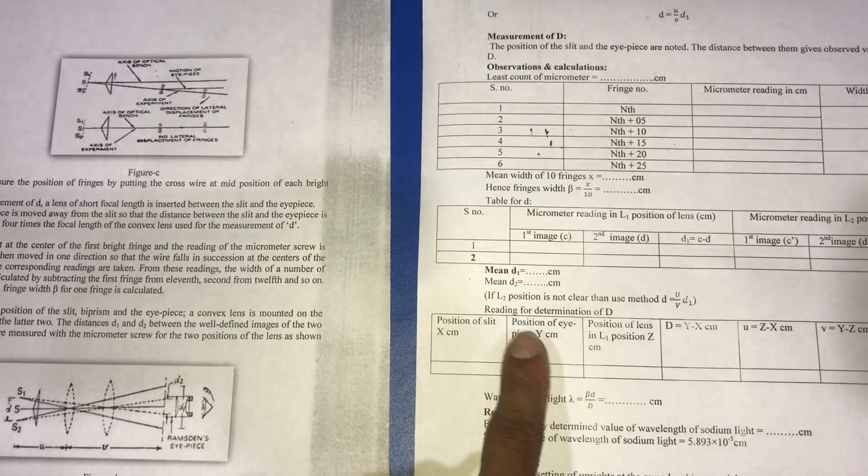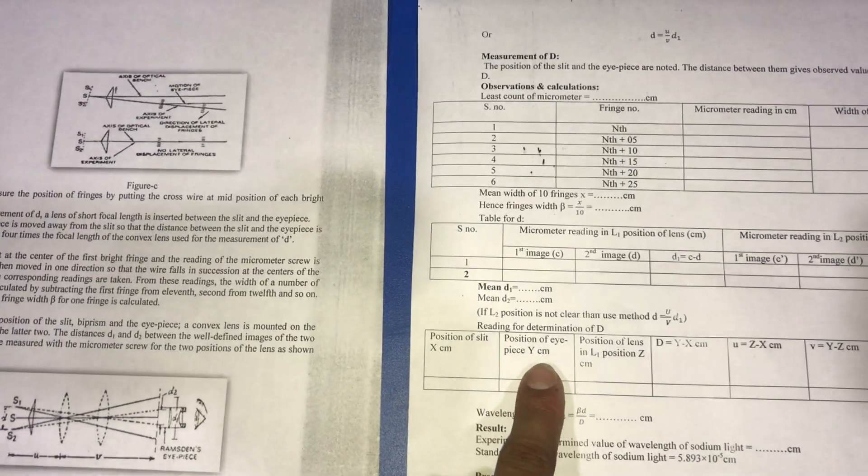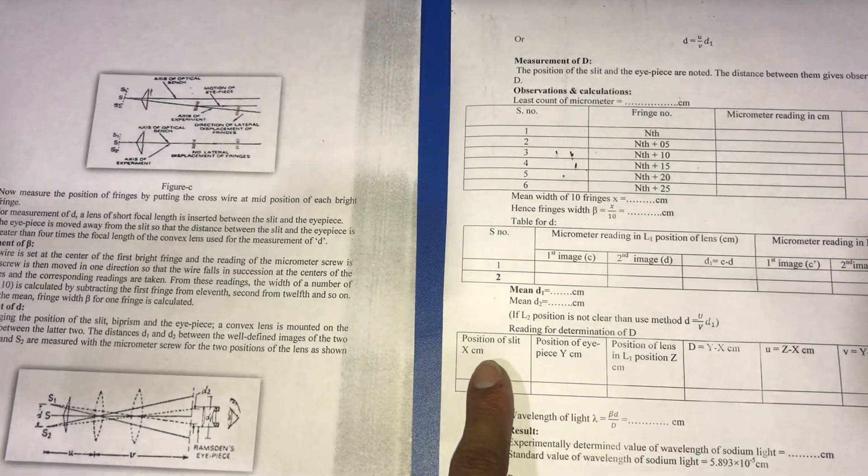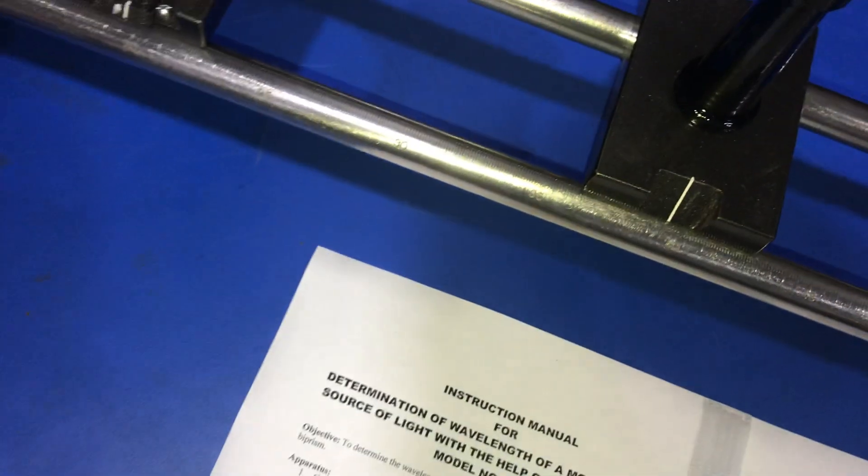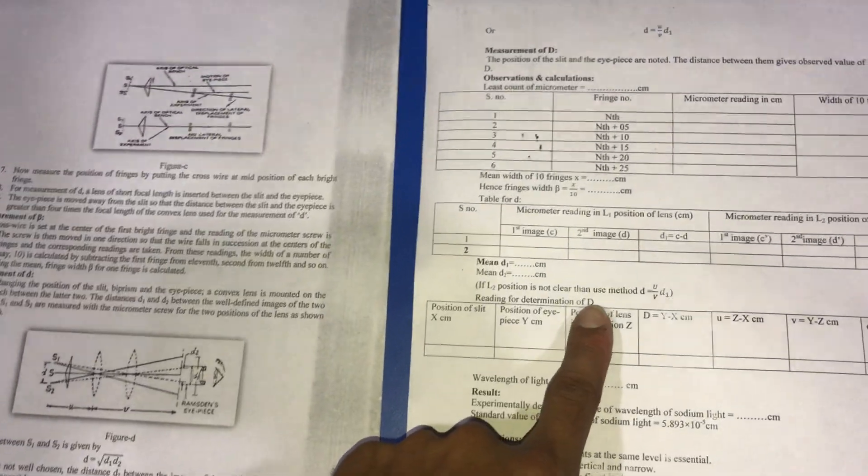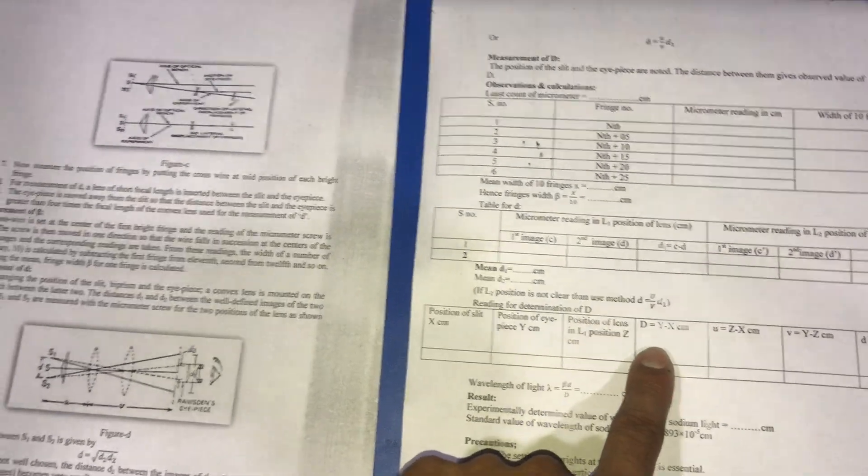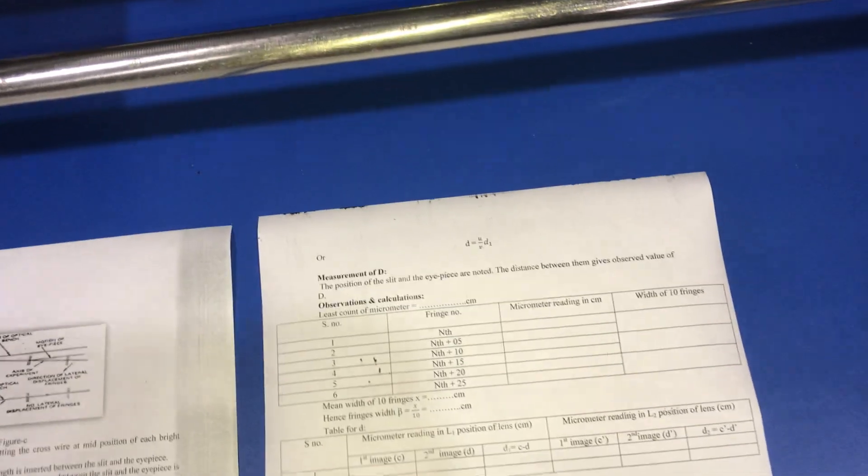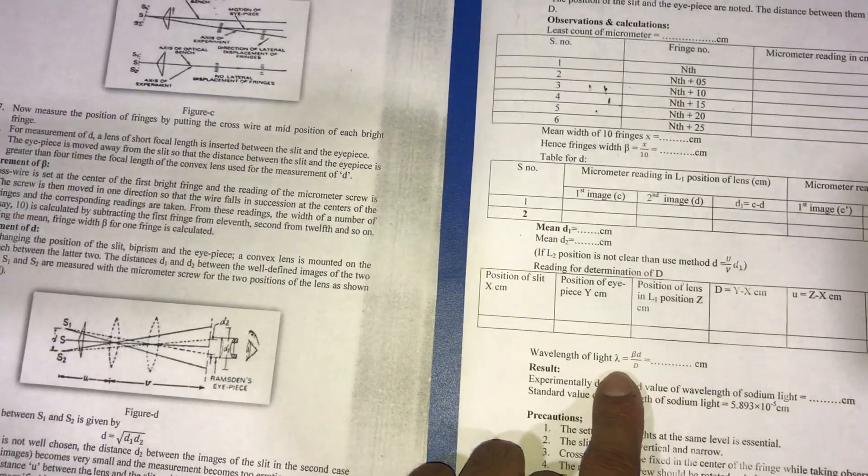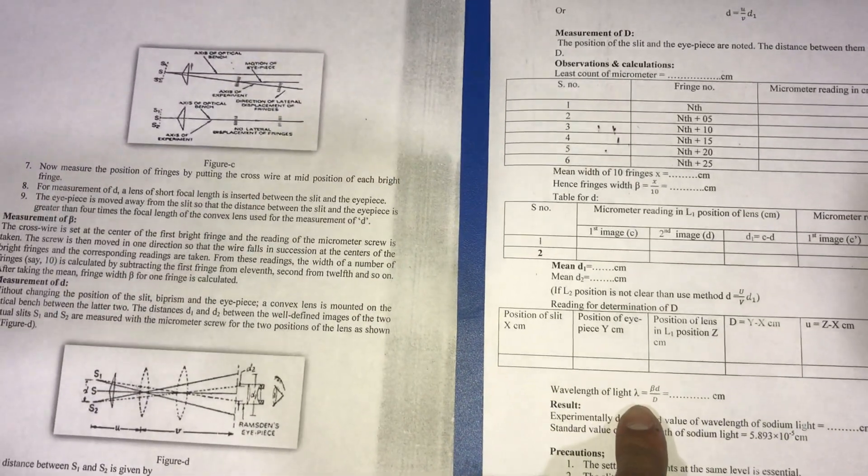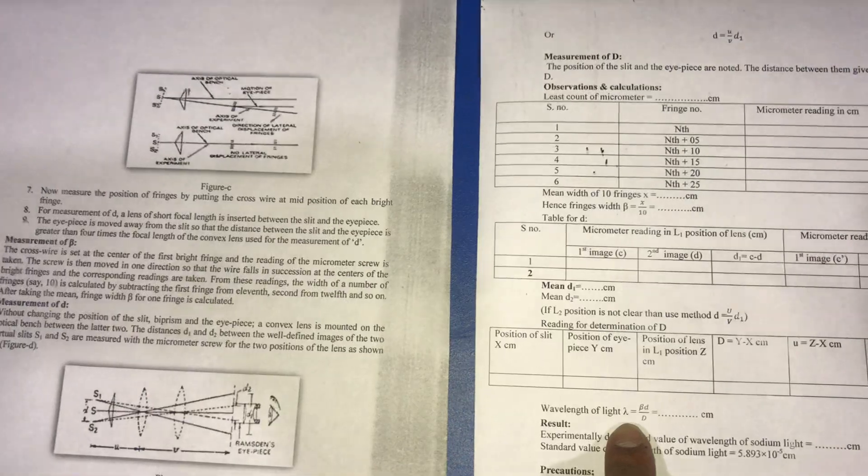Now we measure the distance between the eyepiece and slits using the scale and calculate the value of capital D.